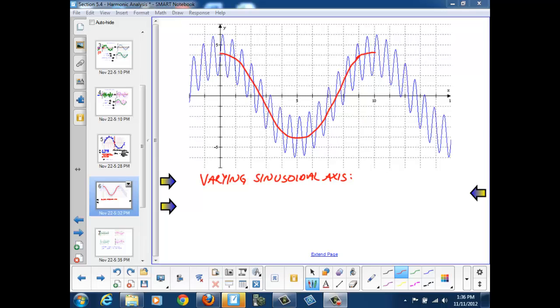That tells me since we have a varying sinusoidal axis that we are dealing with the sum of two sinusoids with unequal periods.